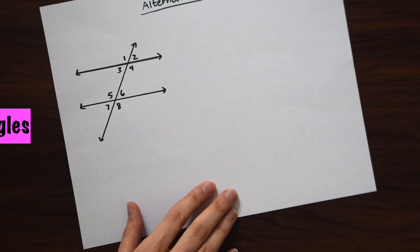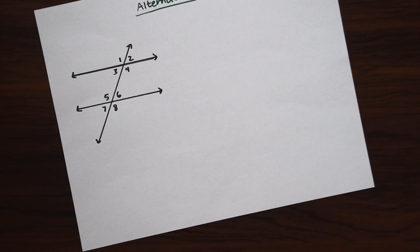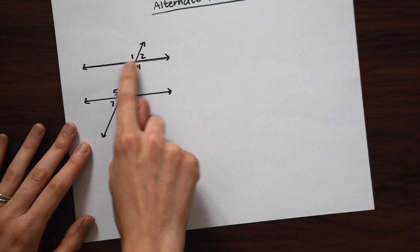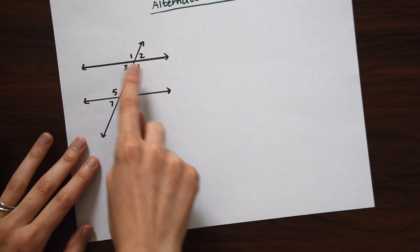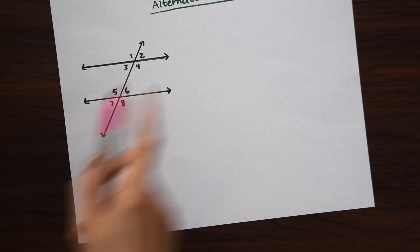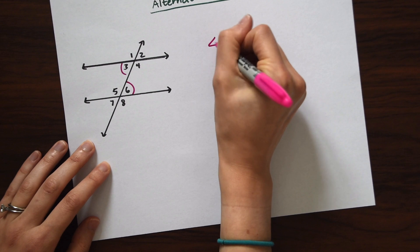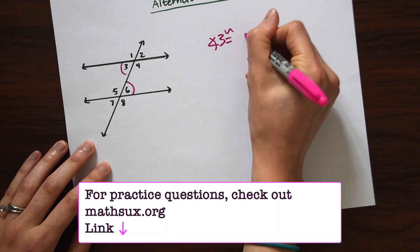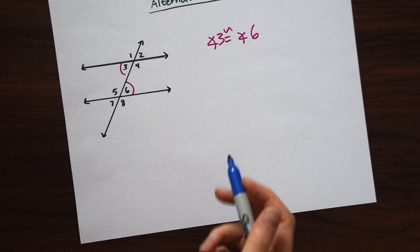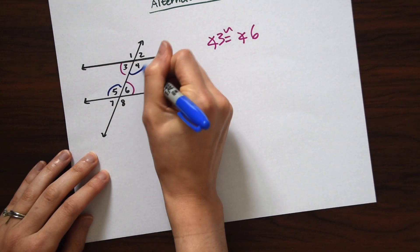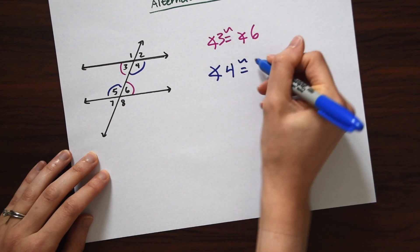The first one we're going to look at is alternate interior angles. Alternate means opposite, and interior means we're looking in between the parallel lines. So we're going to be looking at angles 3 and 6 — these are congruent. Angle 3 is congruent to angle 6. The other pair of alternate interior angles is angle 5 and angle 4, so angle 4 is congruent to angle 5.